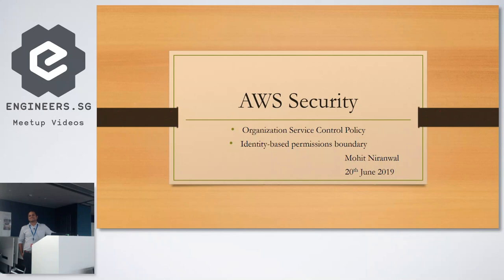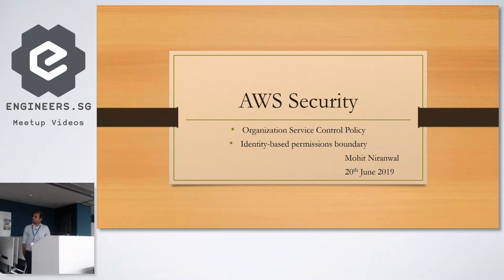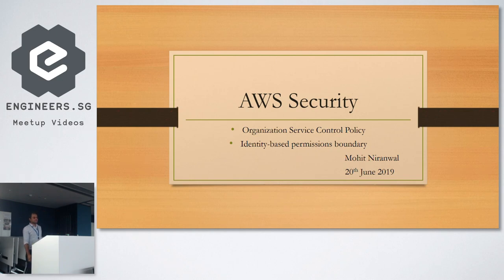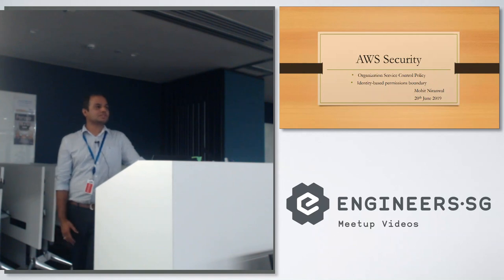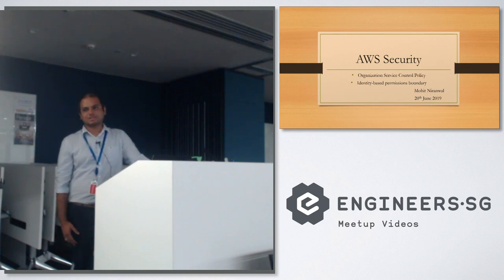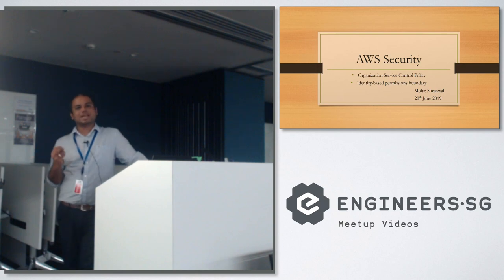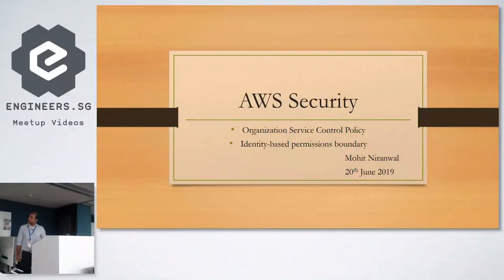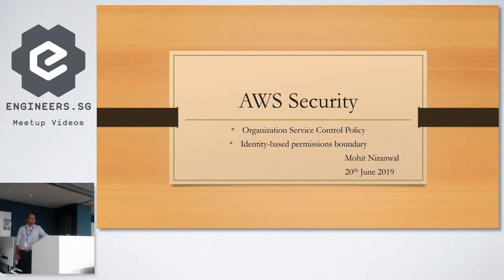Hi guys, it's almost the third session, so this is the last session. I won't take much time. This session is about AWS security, which is a very vast topic — it takes even weeks to cover all the topics. Right now we're going to talk about two edge cases: organization Service Control Policies, and the permission boundary of IAM.